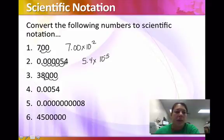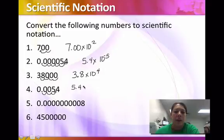So 1, 2, 3, 4. So this would be 3.8 times 10 to the 4th. And then we would go 1, 2, 3. So 5.4 times 10 to the negative 3rd this time. 1, 2, 3. Yeah. Negative 3 because that is a decimal number to begin with.